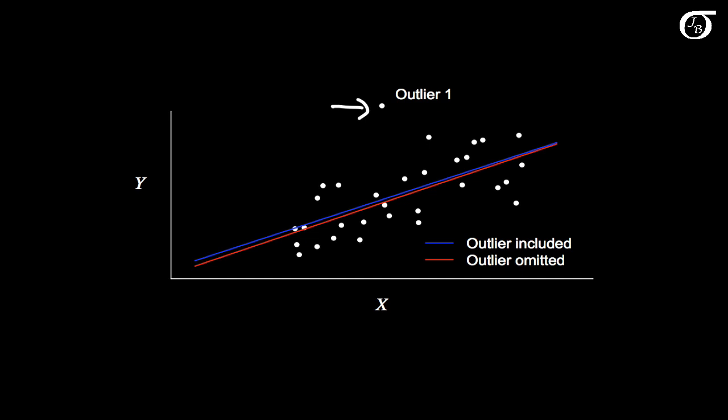Every data point tries to pull the line toward itself. Some do it more successfully than others. And down here I've plotted in a couple of lines. The blue line is the least squares regression line when that outlier is included in the analysis. And the red line is the least squares regression line when that value is thrown out. And they're a little bit different. That point does have some influence on the line, but they're not dramatically different.